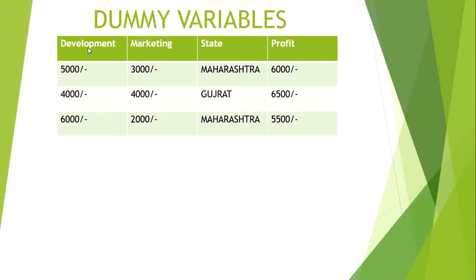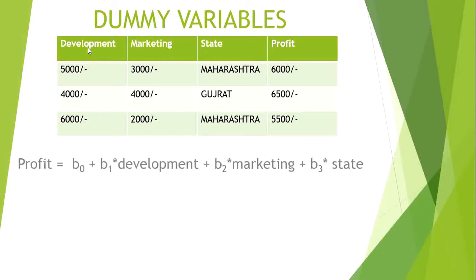So we have to train our model on this dataset. What will our equation become? As you all know, the equation for multiple linear regression is: profit = B0 + B1 times development + B2 times marketing + B3 times state. B0 is the y-intercept, and B1, B2, B3 are coefficients related to profit, development, marketing, and state respectively.